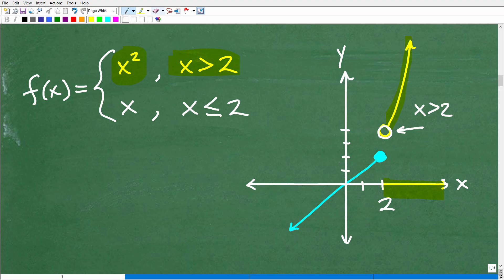So, when x is equal to 2, or less than 2, I have this function x, which is like my 45-degree line, and it's going down this way, and I'm filling in that circle at 2. So, this would be how you would graph a piecewise function.